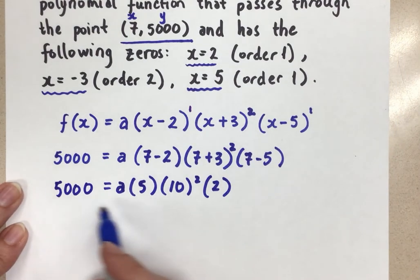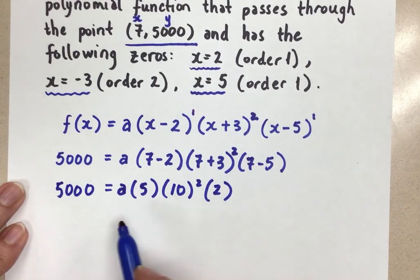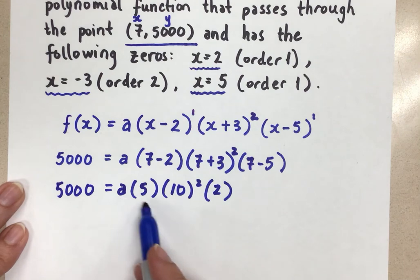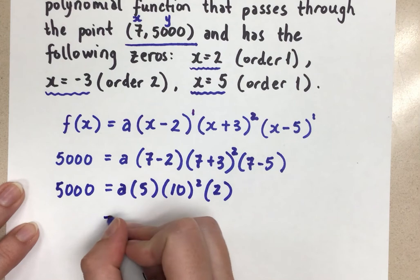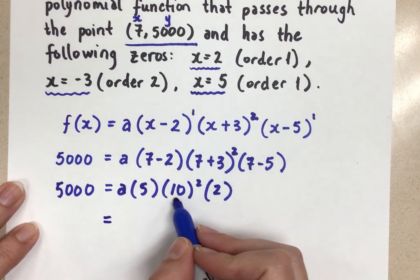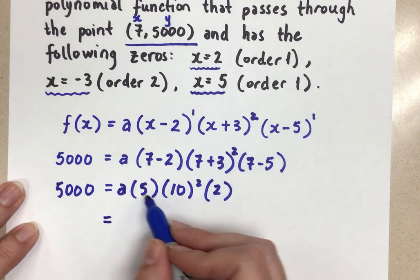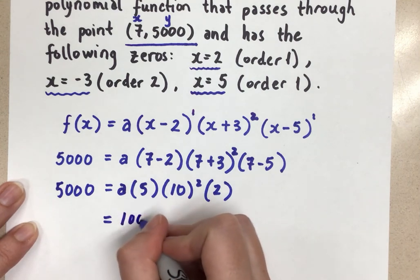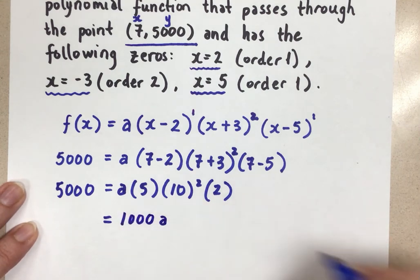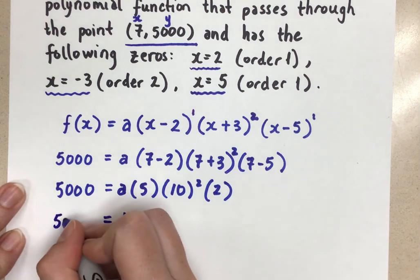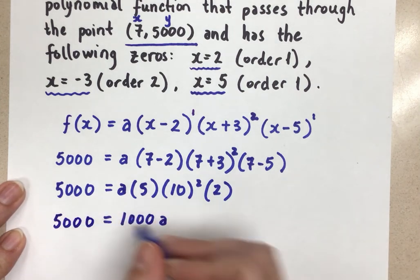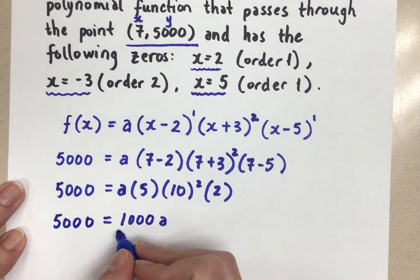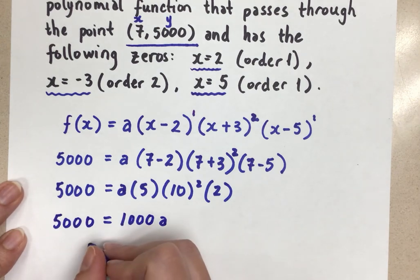All right. So now you can see that this is a simple equation. It has just one unknown. These are all just numbers. So we're going to multiply here on the right side. 10 squared is 100 times 5 times 2. That's 1,000. And we still have times a. And on the left, we have 5,000. So one more step to solve for the a value here. Divide by 1,000 on both sides. And our a value is positive 5.